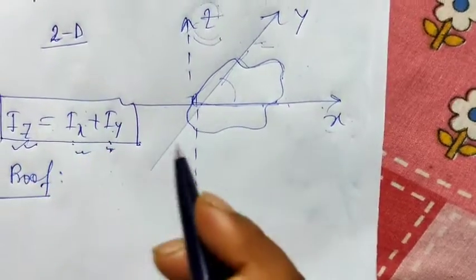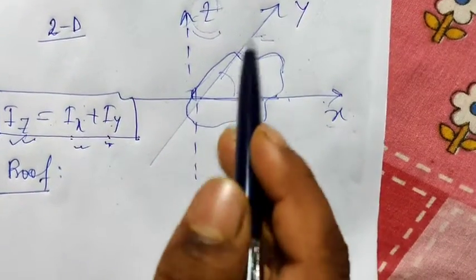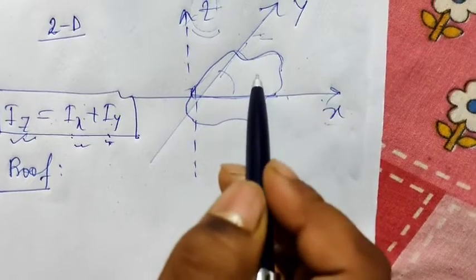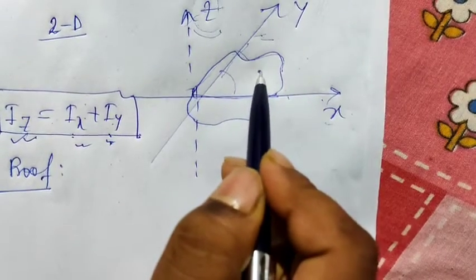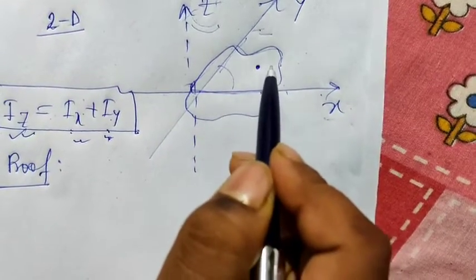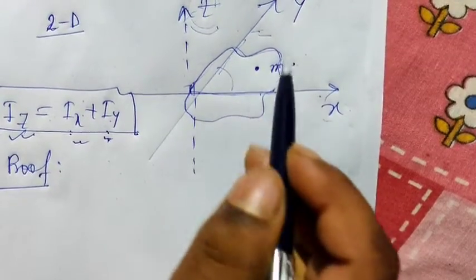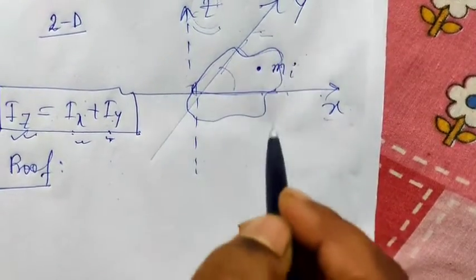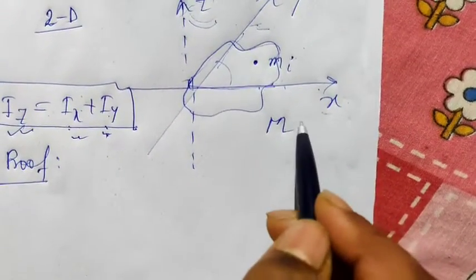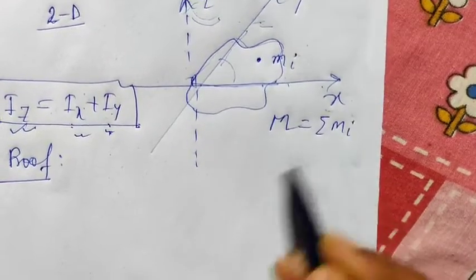Let's prove it. Suppose we consider that the body lies in the xy plane. We consider a point mass — suppose we say mass i. The total mass of the body is capital M, which is basically the summation over mi.